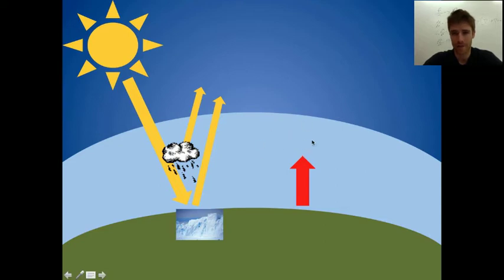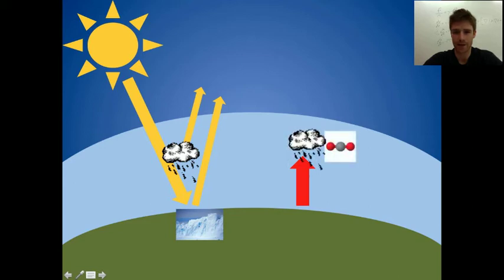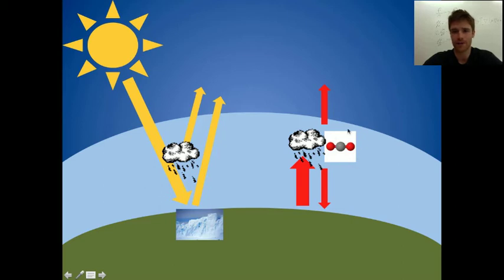I'm going to add a little complication to this diagram to make it more like reality. This energy leaving the Earth's surface doesn't actually escape straight to space. What happens is it gets absorbed and re-emitted by things like clouds and greenhouse gases, which absorb it and then re-emit this infrared radiation in all directions. A portion still escapes to space, but a portion is directed back down towards the Earth's surface. Without these atmospheric constituents, the infrared radiation would escape straight to space. This is the natural greenhouse effect of the Earth.